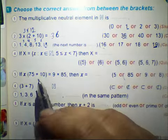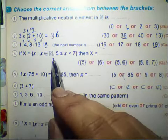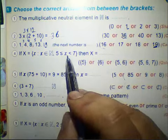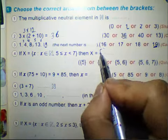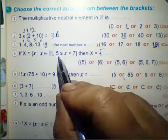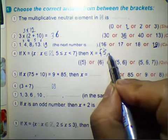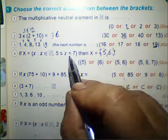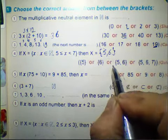Question number 4: if x equals the set of x such that x belongs to N, x is greater than or equal to 5, and x is less than 7, then x equals the set beginning with 5. You write 6 only because x is less than 7. So you must write 5 and 6.